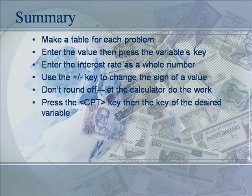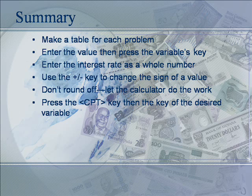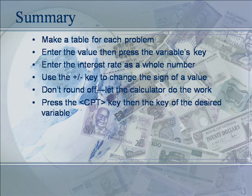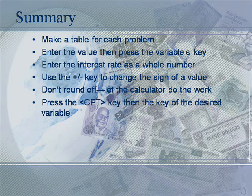In summary, we need to make a table for each problem, then enter the value, then press the key for that variable. Remember, that's our order of operations — we want to type in the number, then hit the variable key, not backwards. It won't work if you do it backwards. We want to enter the interest rate as a whole number, and sometimes, if we have multiple compoundings per period, we may have to divide by little n, the number of compoundings per period. If we have a cash outflow, we need to use the plus-minus key after entering the value in order to change the sign to reflect a cash outflow. Don't round off — let the calculator do the work. Then, in order to calculate the actual value or variable, we need to press the CPT key, then the key of the desired variable.